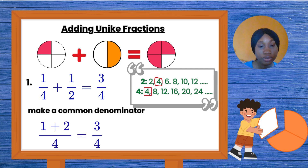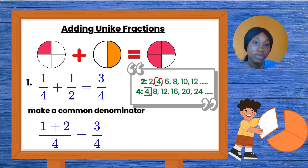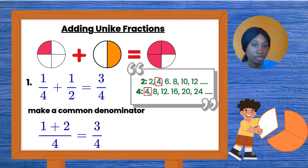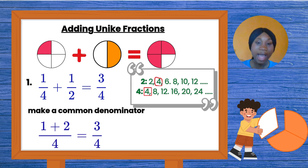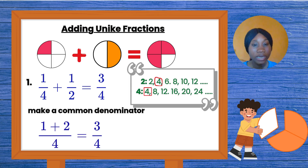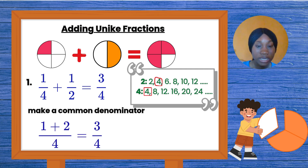I'm going to try to make the two numbers at the bottom be the same number. At the bottom I have four and two. Step one: write out the multiplication tables of two and four. The multiplication of two goes two, four, six, eight... up to twenty-four. The multiplication of four goes four, eight, twelve... up to forty-eight. Step two: find a common number — a number that appears in both multiplication tables. Looking carefully, I observe that four appears in the multiplication table of two and also in the multiplication table of four. So four is the common denominator, and I'm going to write down that four.